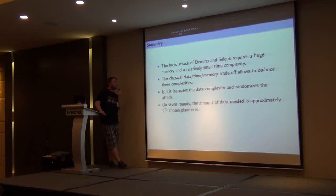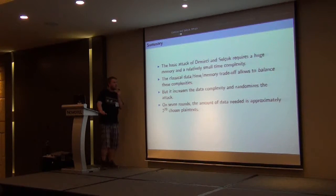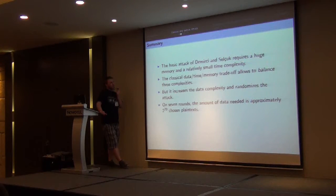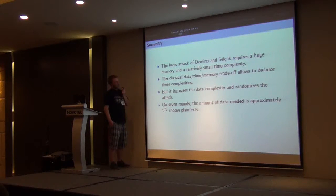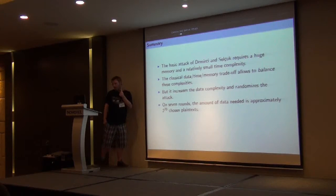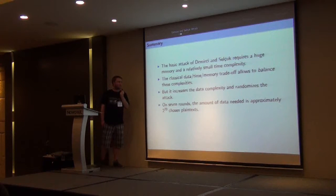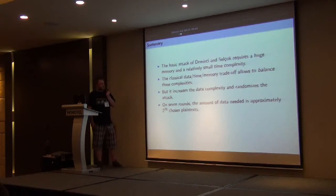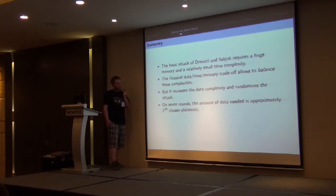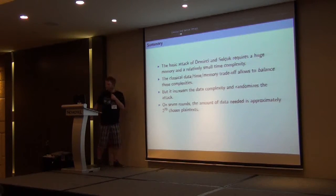To summarize, the basic attack of Demirci and Selçuk requires huge memory and relatively small time complexity. We can balance these complexities by applying the classical data-time-memory tradeoff, for instance to apply the 7-round attack on AES-192, but this increases the data complexity. For instance, on 7 rounds, the data complexity will be approximately 2 to the 70 chosen plaintexts.